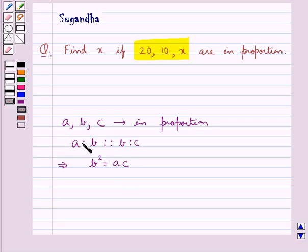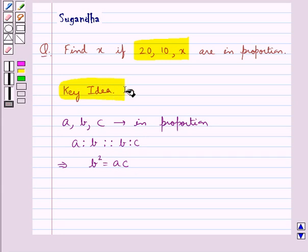That is, the product of extremes is equal to the product of the means, and so we get B square is equal to AC. This is the key idea to be used in this question.